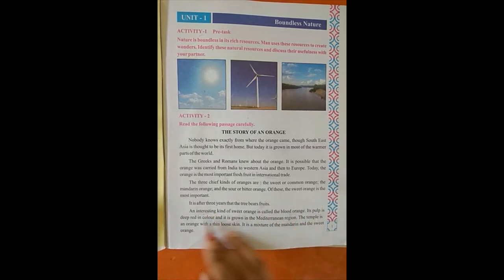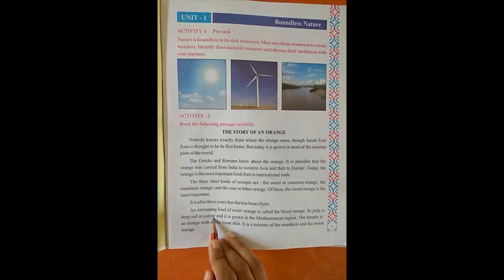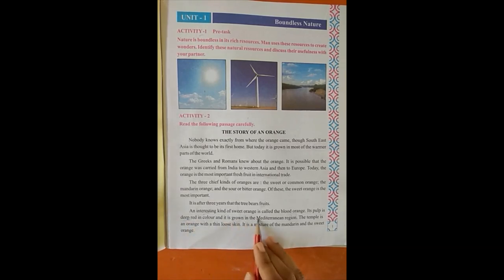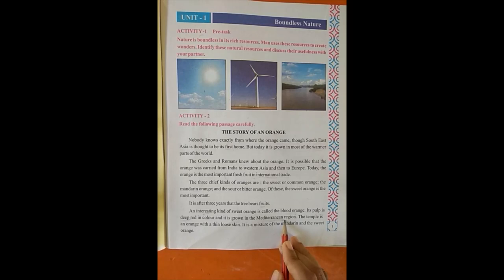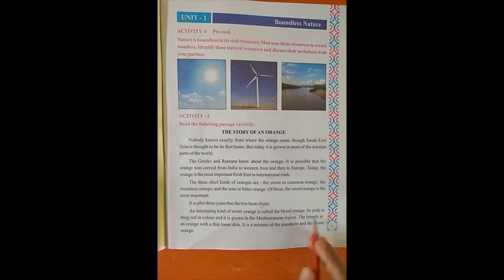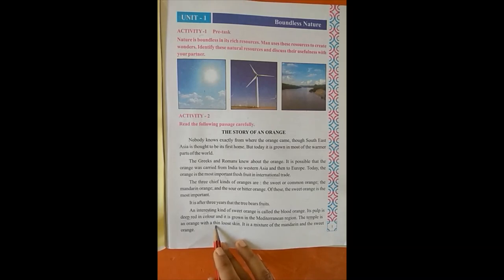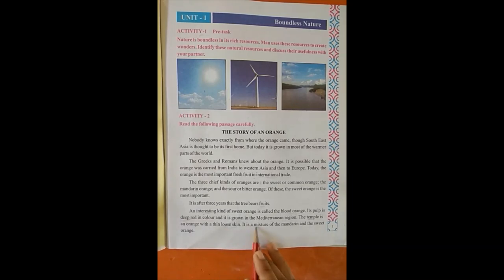इस blood orange का जो pulp होता है वो deep red color का होता है। And it is grown in the Mediterranean region — Mediterranean sea के आसपास की places में, जैसे कि Spain। The temple orange is an orange with a thin loose skin। It is the mixture of the mandarin and the sweet orange।